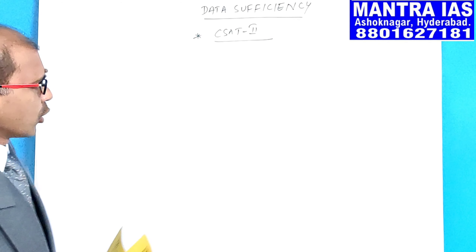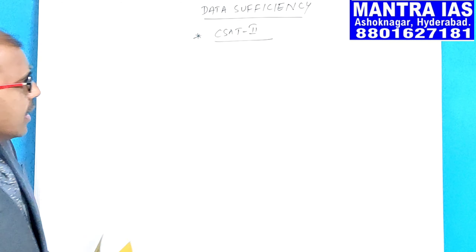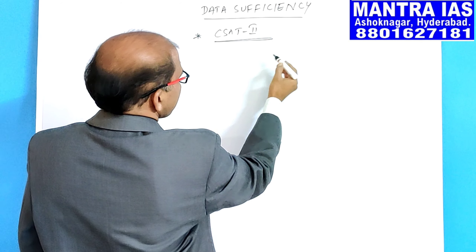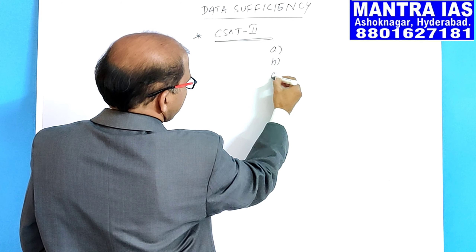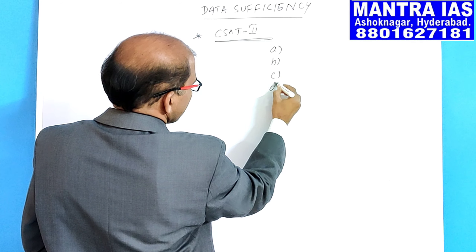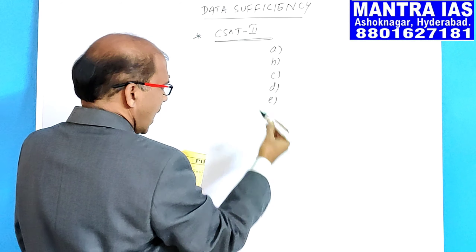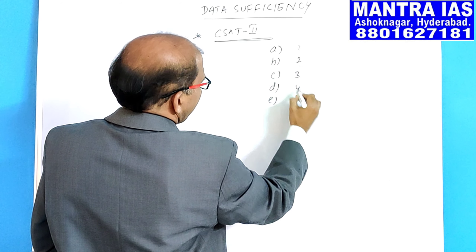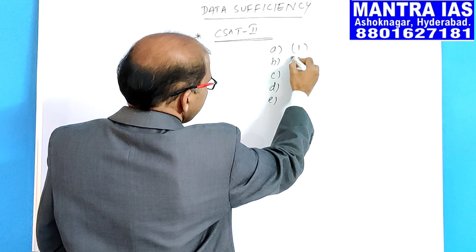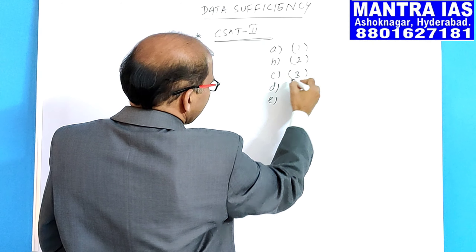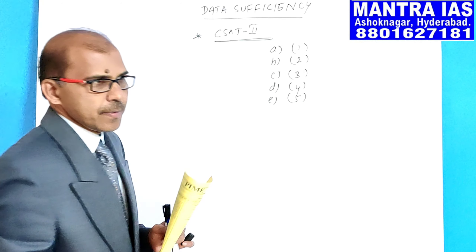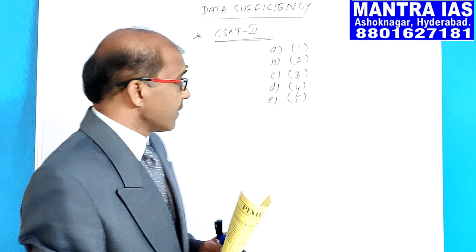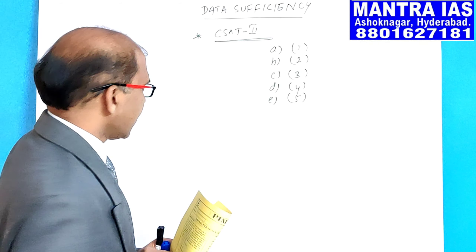First of all, I will give you the models of this topic. You have 5 options for every question — option A, option B, option C, option D, and option E. In some cases they are numbered 1, 2, 3, 4, 5. In this particular topic, what we call data sufficiency, we have to mark answers in a different style.